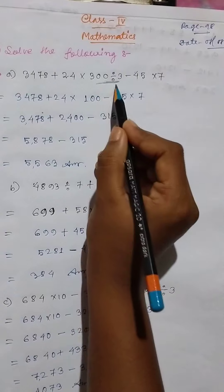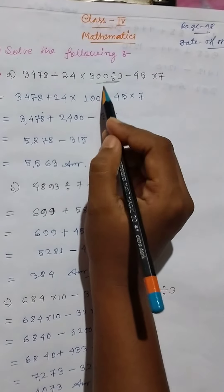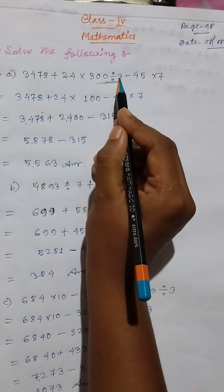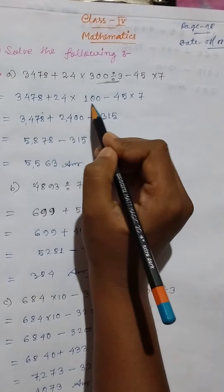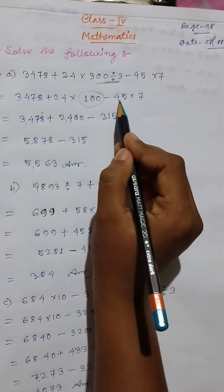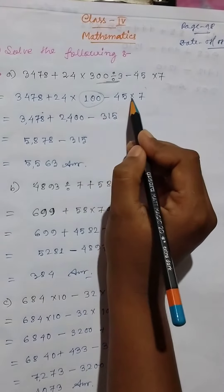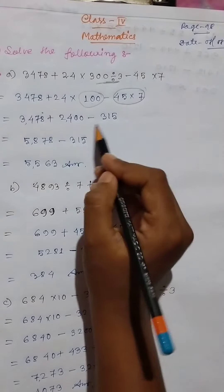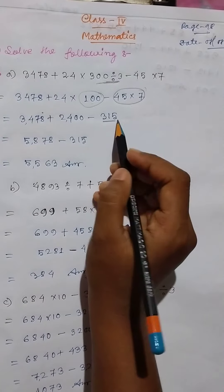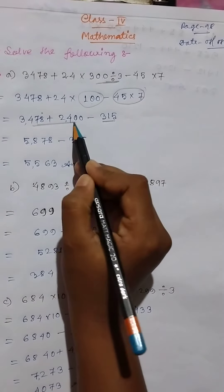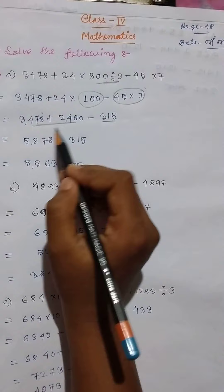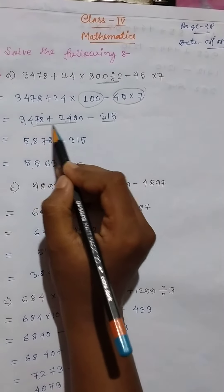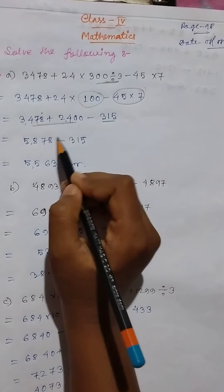So 300 divided by 3. Here the answer is 100. And then second part, multiplication. 45 into 7 is 315. 2478 plus 2400, so here 5878.